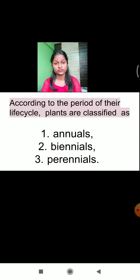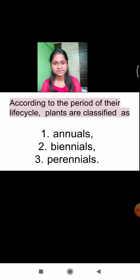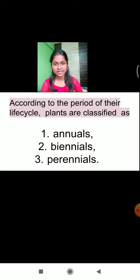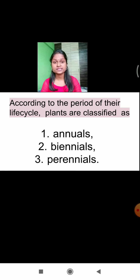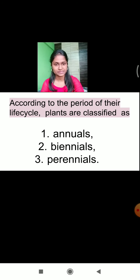In the last lecture, we learnt that according to the period of the life cycle, plants are classified into 3 types: annual plants, biennial plants, and perennial plants. Plants which complete their life cycle within 1 year are called annual plants. Plants which require 2 years to complete their life cycle are called biennial plants. Plants which can survive for many years are called perennial plants.